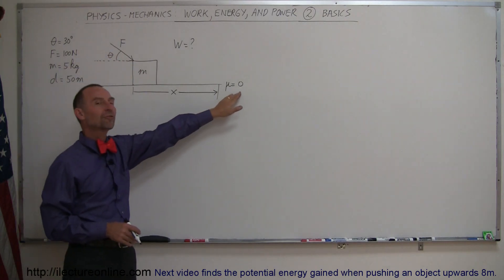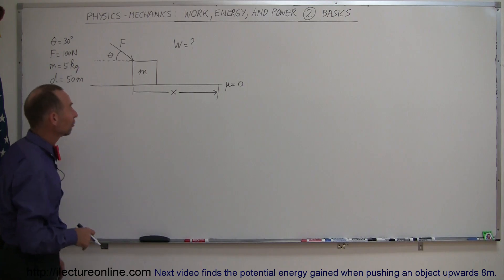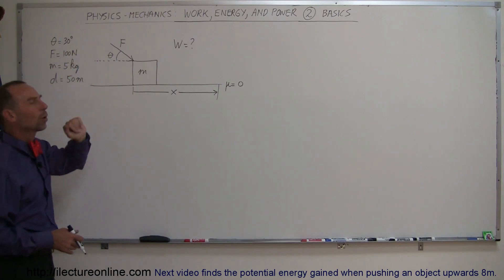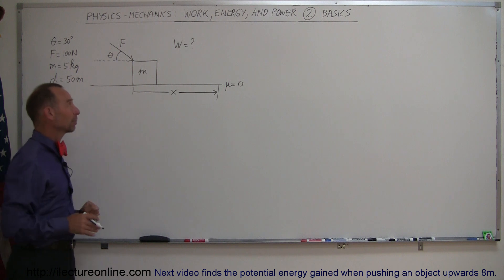In this case also, we don't have any friction between the block and the floor. So if the distance or displacement is 50 meters, the mass is 5 kilograms, the force is 100 newtons, and the angle is 30 degrees, what is the work done in this case on that particular block?